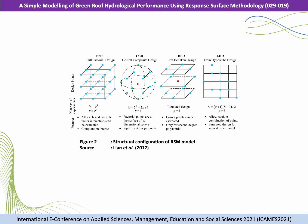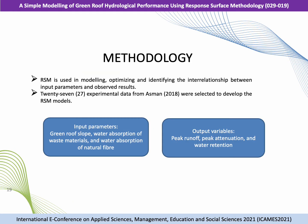This figure shows the structural configuration of the RSM model. In this study, RSM is used in modeling, optimizing, and identifying the interrelationship between input parameters and observed results. As mentioned before, 27 experimental data points from Azman were collected to develop the models. The input parameters are green roof slope, water absorption of the waste materials, and water absorption of the natural fiber. The output variables are peak runoff, peak attenuation, and water retention.